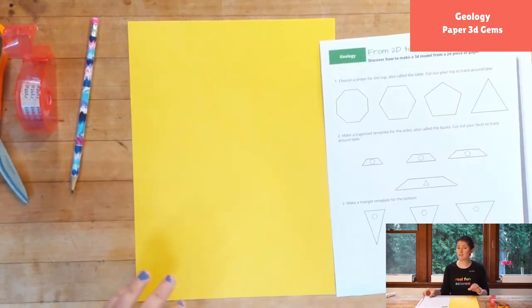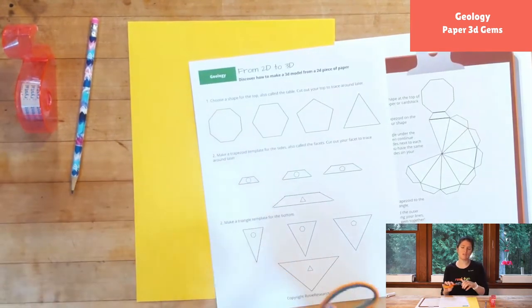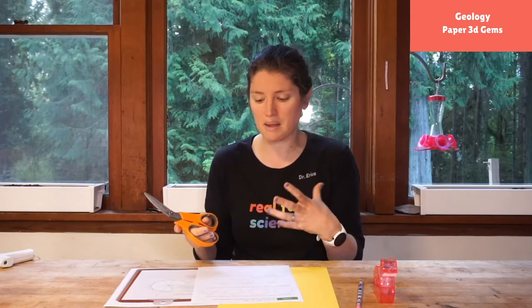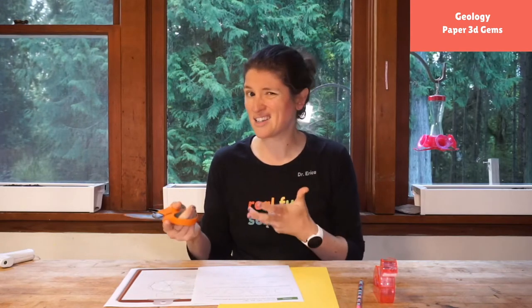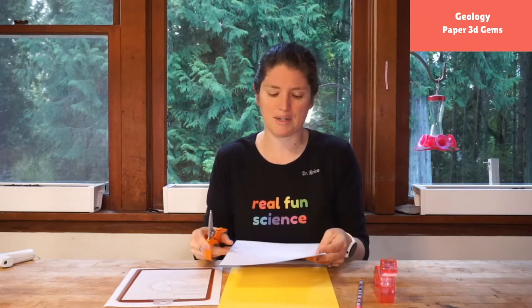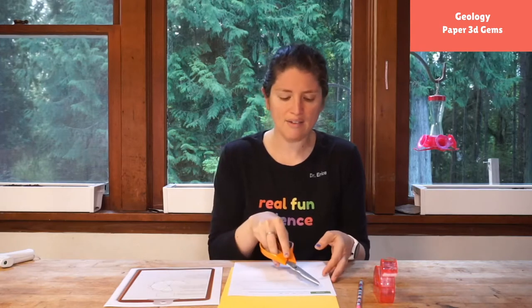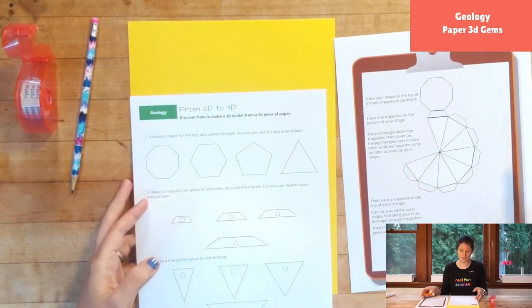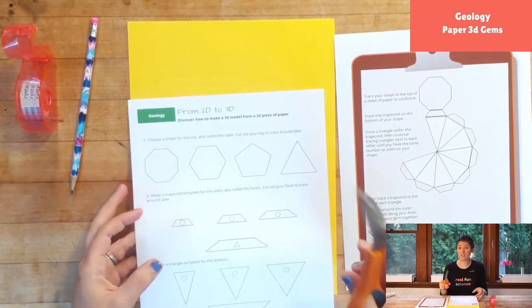The great part of making your own template is that you can choose a different type of paper, maybe that's clear paper, maybe it's glitter paper, but you can do it on any type of paper that you might not be able to print on. So since we have the octagon over here on our handout that you can download, I'm actually going to do the triangle today.